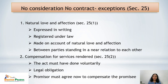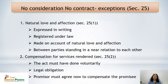The second exception under Section 25(2) is compensation for services rendered. If a person has voluntarily rendered services and is now being compensated for those services, the contract is valid even without fresh consideration — provided the act was done voluntarily, there was a legal obligation to do it, and the promisor now agrees to compensate. The best example is a finder of lost goods who has a legal obligation to return them and does so voluntarily; if the owner then promises compensation, that is a valid contract.